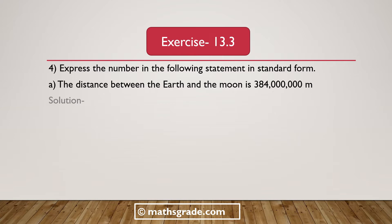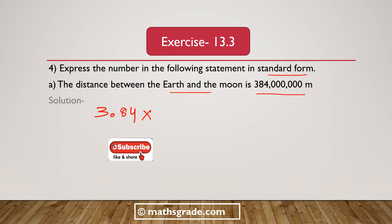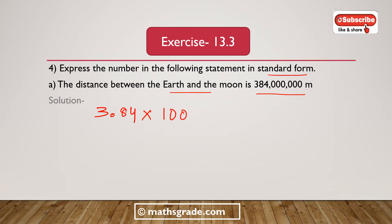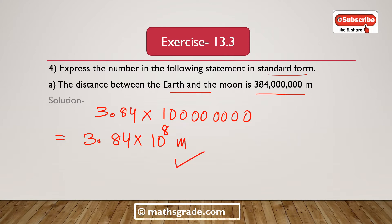Now we solve question number 4. Express the number in the following statement in standard form. First, the distance between the Earth and the Moon is 384,000,000 meters — that is 384 lakh meters. So if we place the decimal point after 3, it will be 3.84 multiplied with 10 to the power 8 meters. This is the standard form. So the distance between the Earth and the Moon is 3.84 × 10⁸ meters.